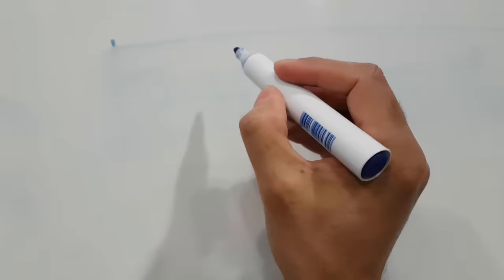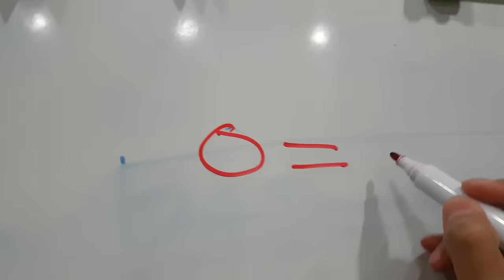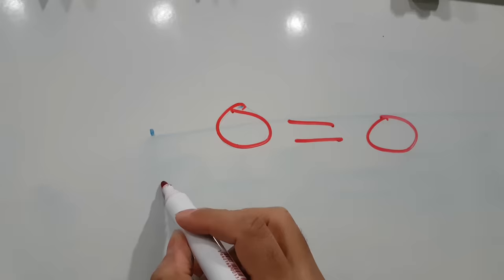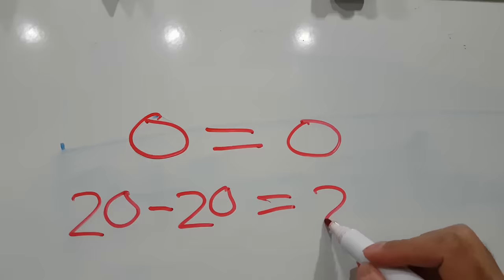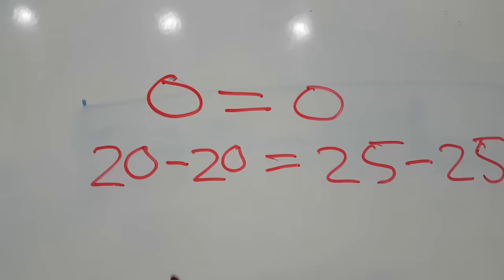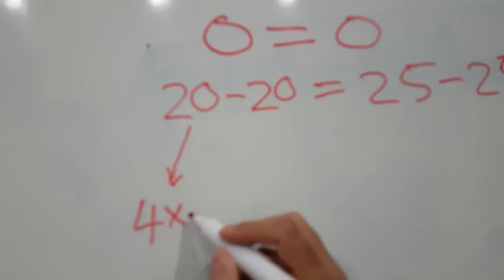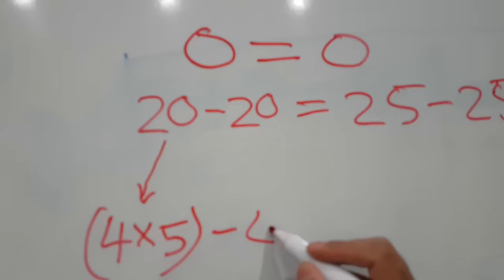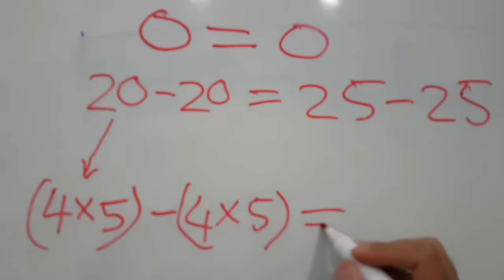Let me start and prove how to do that. I am starting with: 0 is equal to 0. According to mathematics, 0 equals 0 is supported. I can expand this as 20 minus 20, which equals 0, and also as 25 minus 25. Now I can expand 20 as 4 times 5, and the next 20 I can also expand as 4 times 5. Similarly, I can expand 25 as 5 times 5.